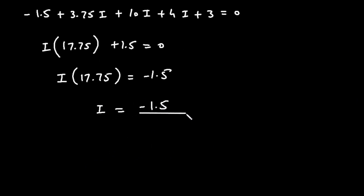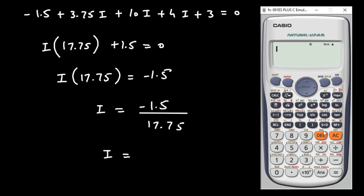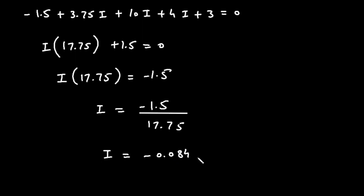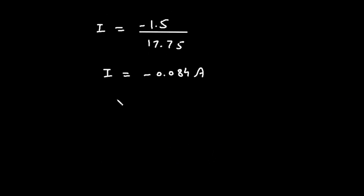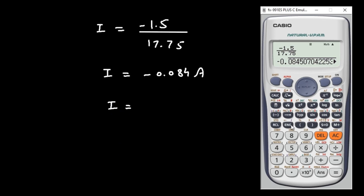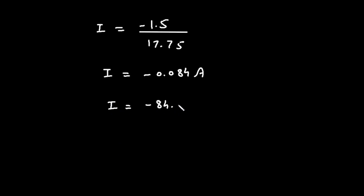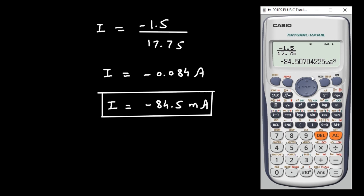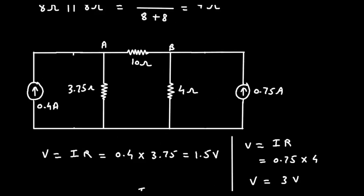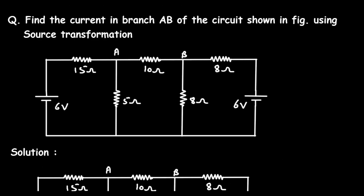Therefore I is equal to minus 1.5 divided by 17.75, which equals minus 0.084 ampere, or equivalently minus 84.5 milliampere. The negative sign indicates the assumed current direction is opposite to the actual direction. Don't forget to like, share and subscribe to this channel. Thanks for watching.